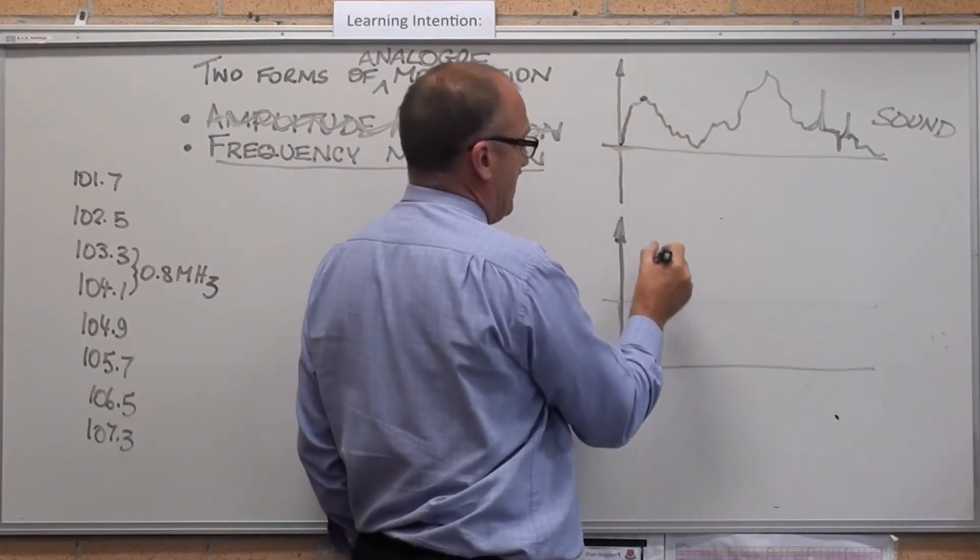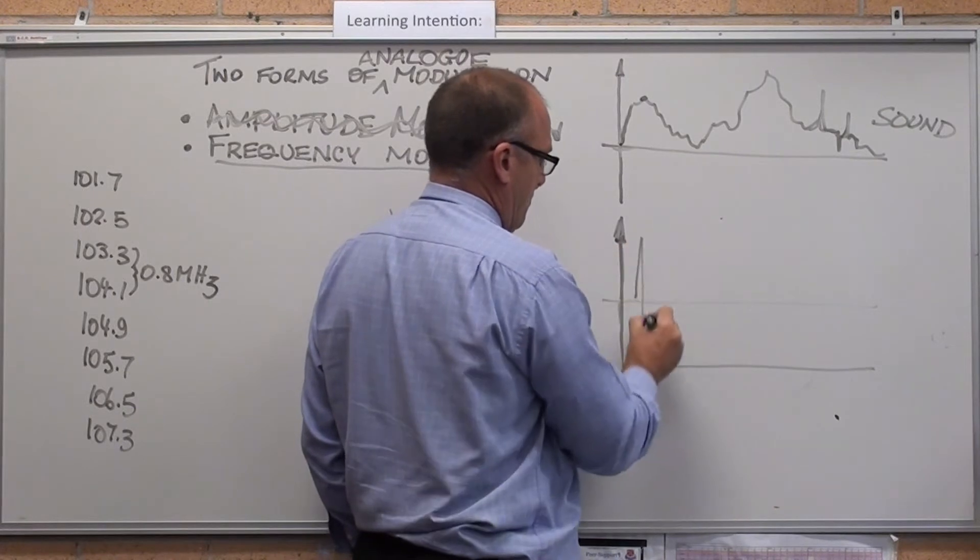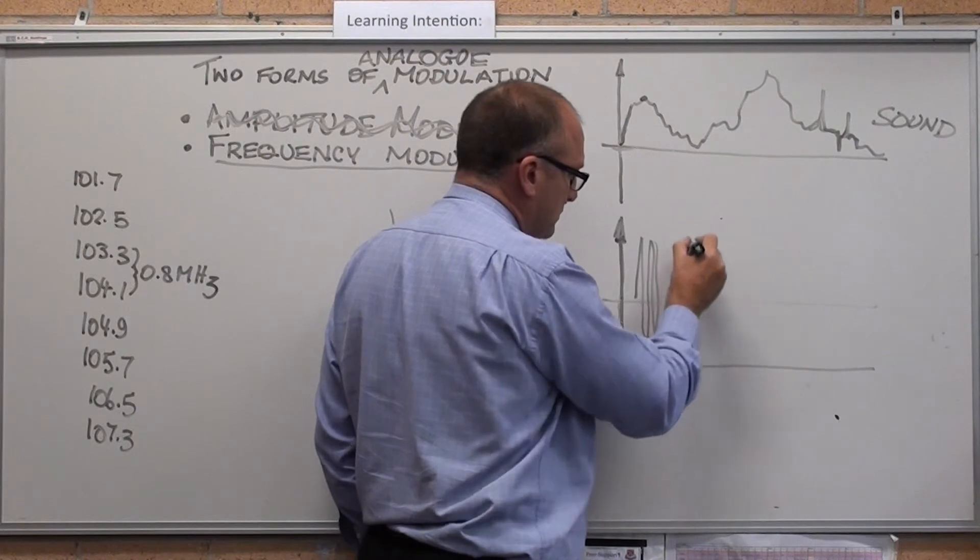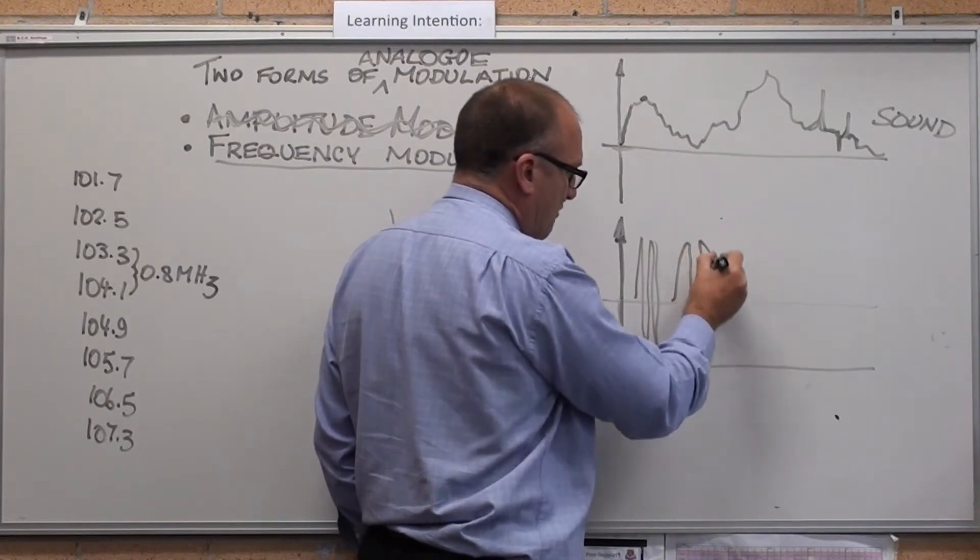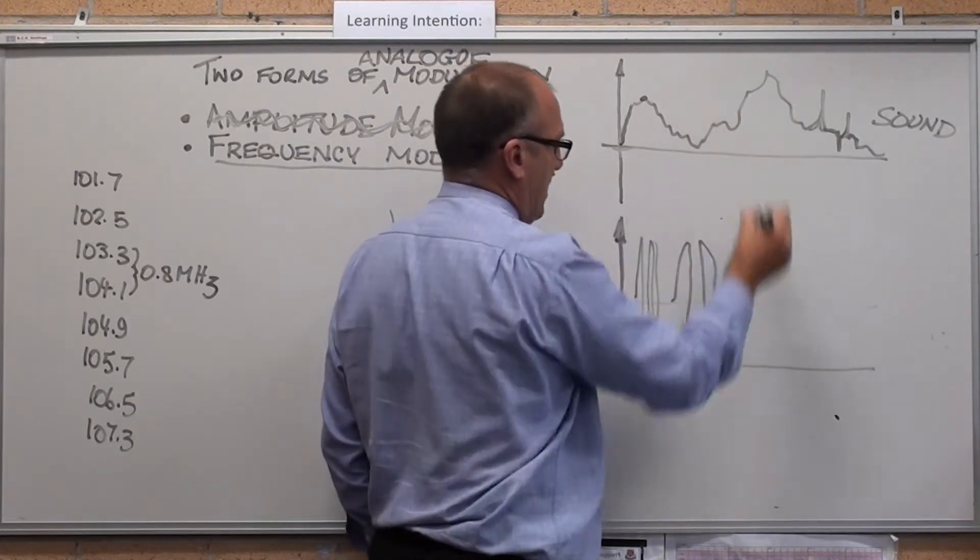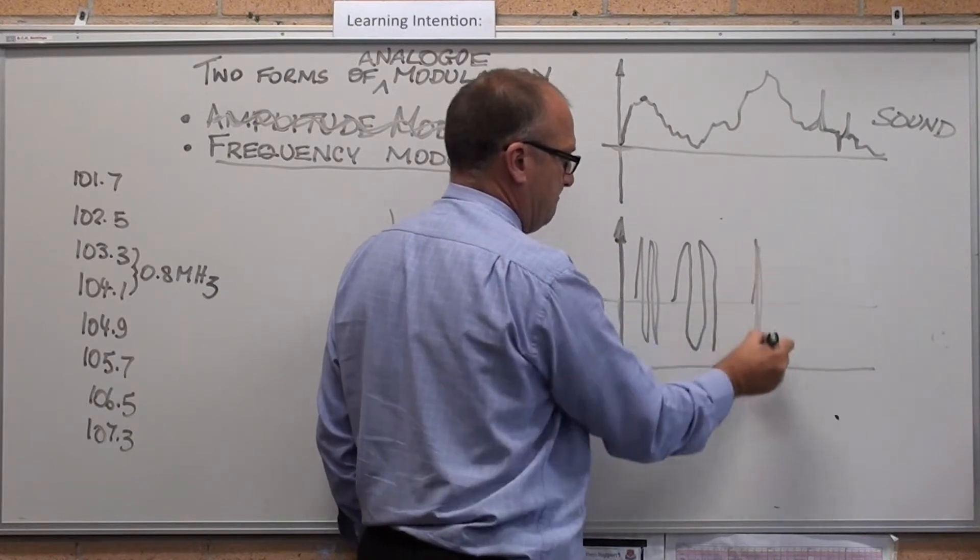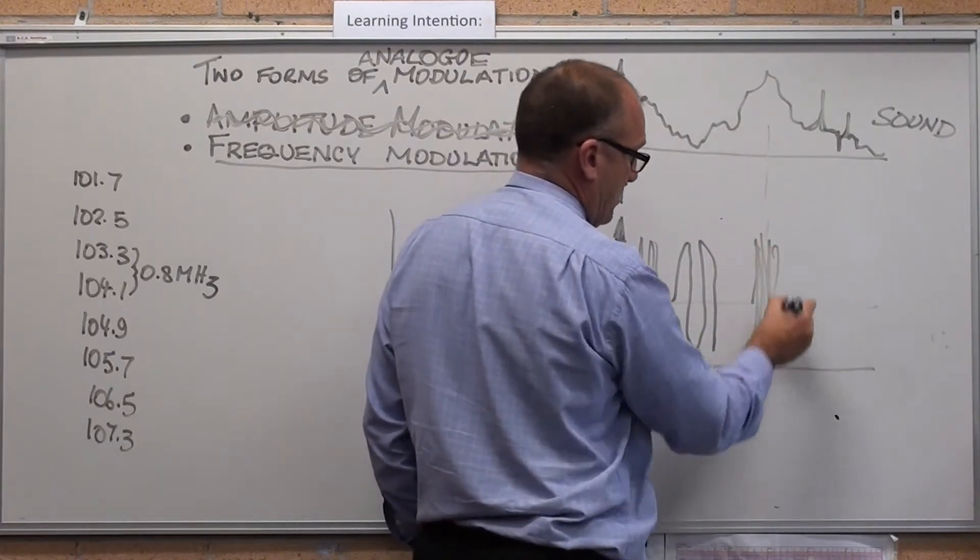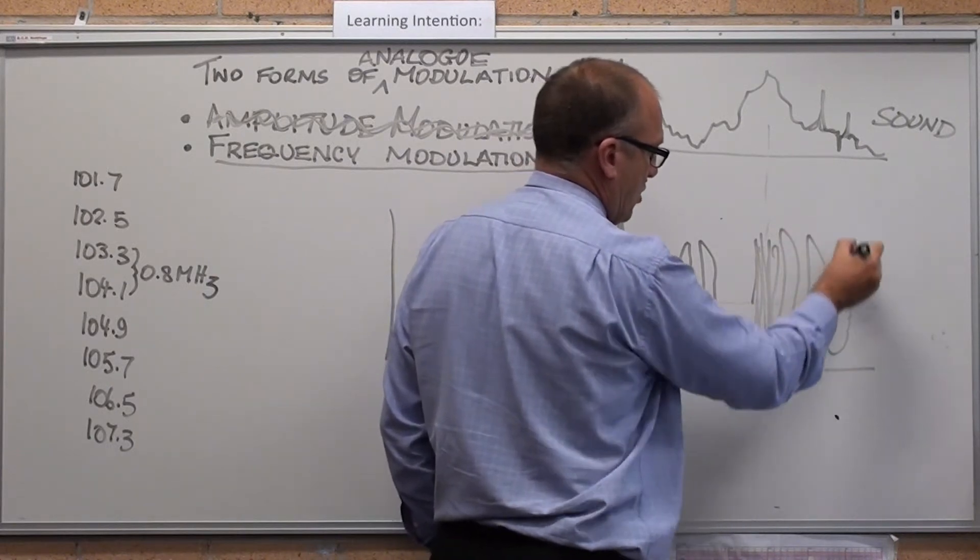So up there, radio waves are close together. Down here, I'm exaggerating, the radio waves are far apart. Up here, the radio waves are really close together. Then they are gradually getting longer.